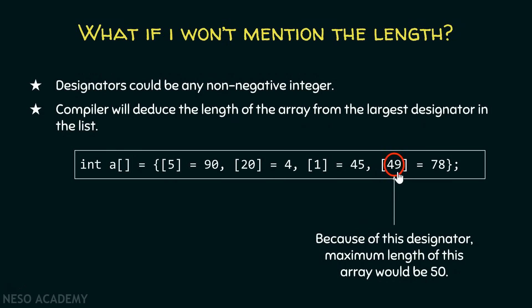So compiler will deduce that the length of this array will be 50. Because of this designator, maximum length of this array would be 50. As this is the index and this is the largest index, therefore the length of this array will be 50 because it is always largest index plus one.